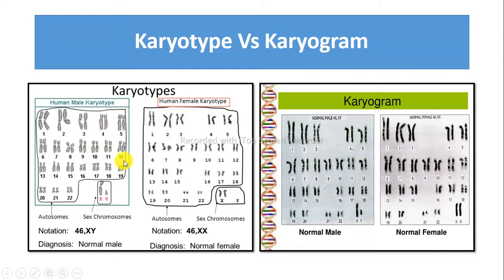Karyotype helps to determine the chromosome complement of an organism, whereas karyogram helps to identify chromosomal aberrations.